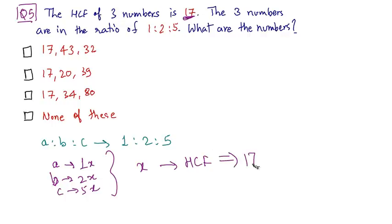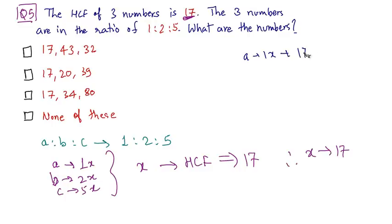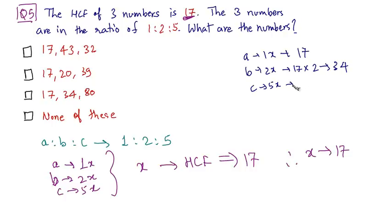Since x is the only common factor, we can comfortably say that it is the highest common factor of these three numbers. So HCF is x, and we have been given that the HCF of these three numbers is 17. Therefore the value of x is 17. We can now find the values of A, B, and C. A is 1x, that is 1 into 17, which comes out as 17. B is 2x, which is 2 into 17, which comes out as 34. And C is 5x, which is 5 into 17, which is 85.